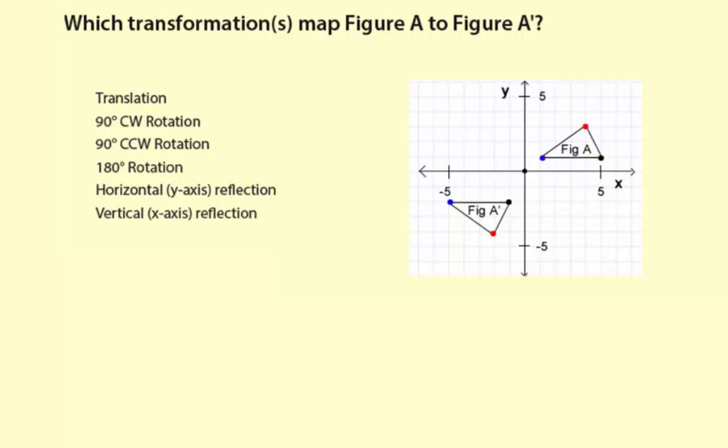If I do a reflection through the x-axis, that would put the blue right here, and the red would be right here, and the black would be right here.